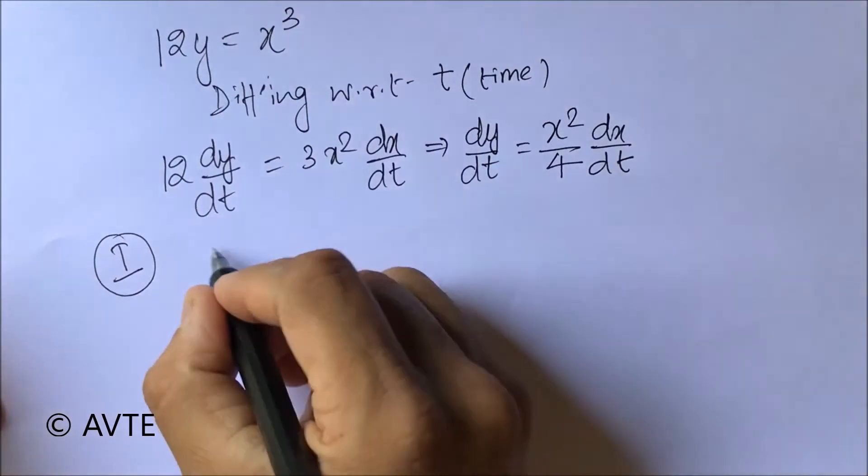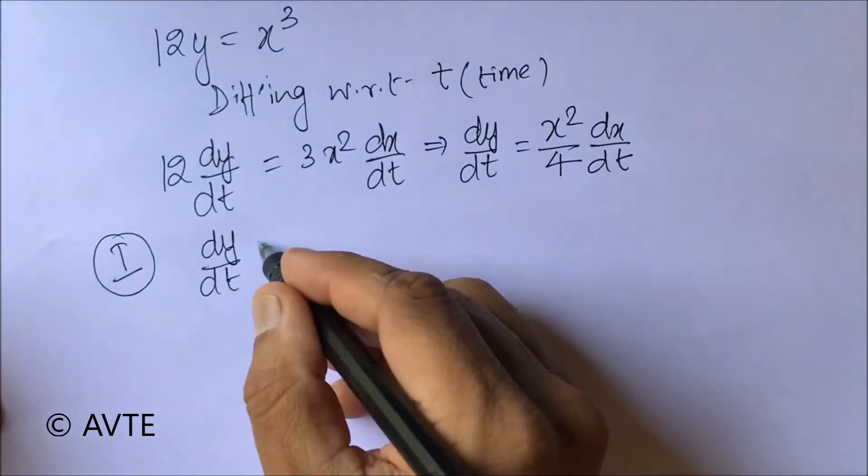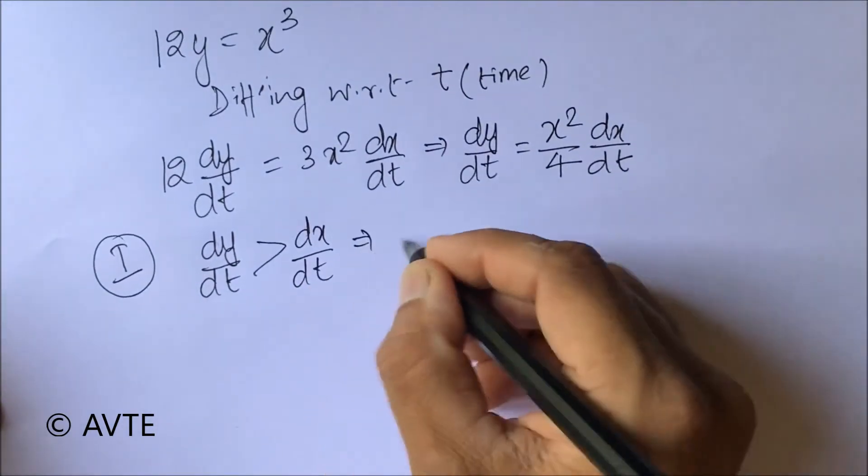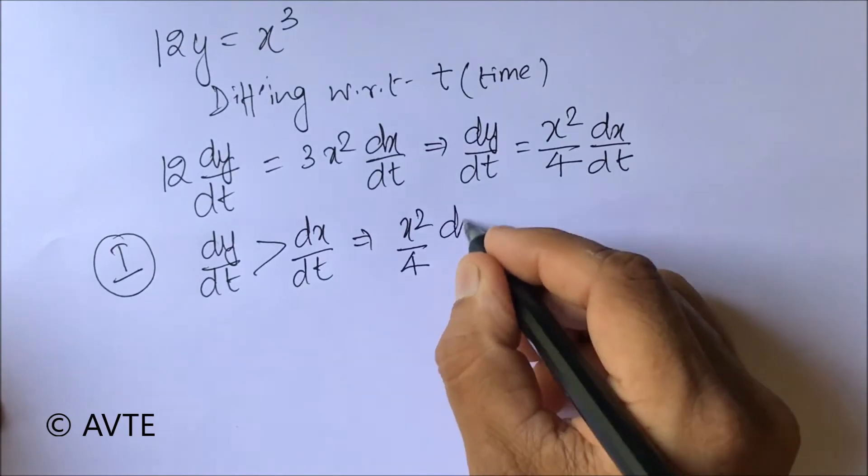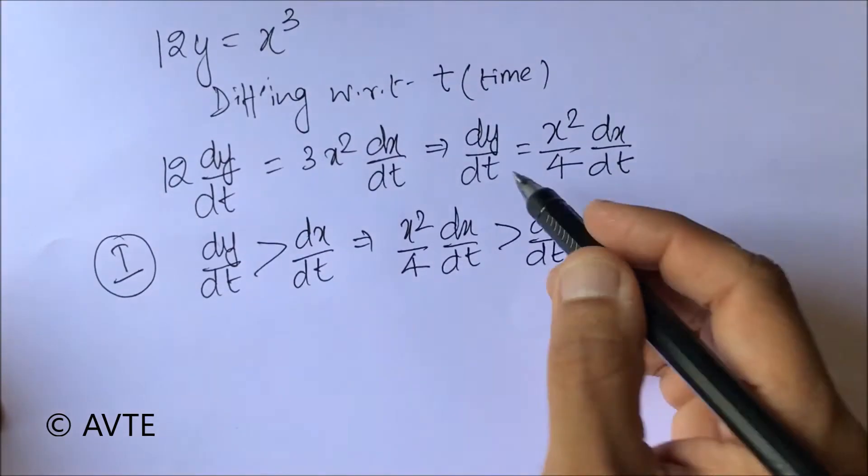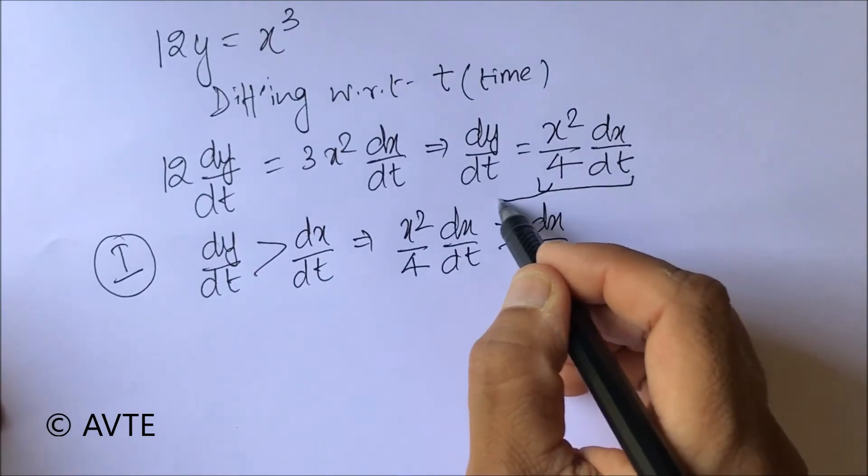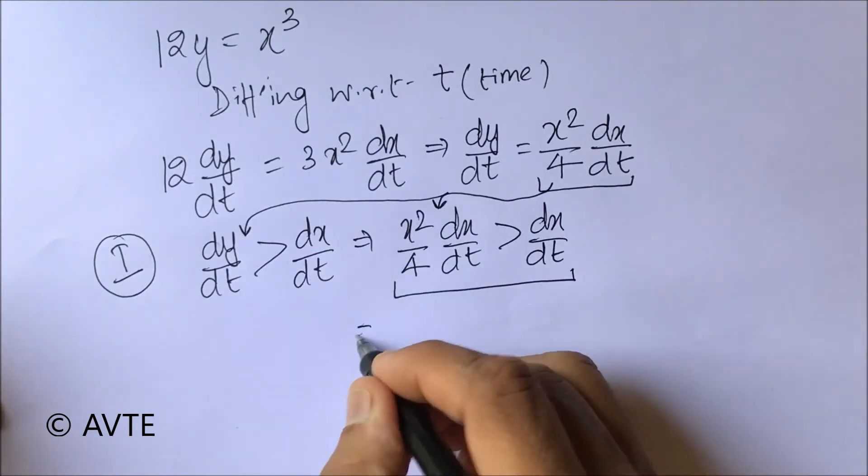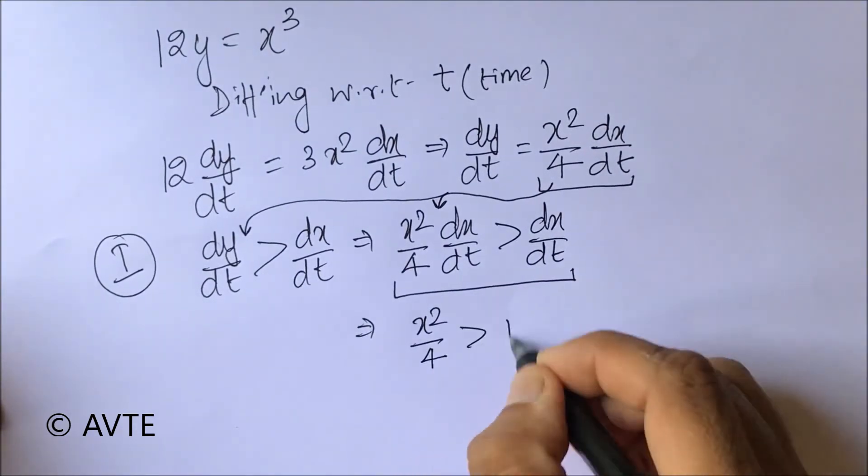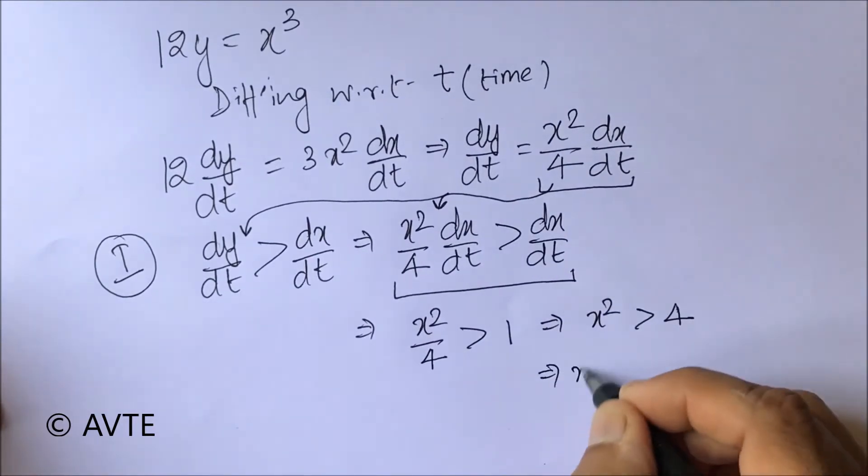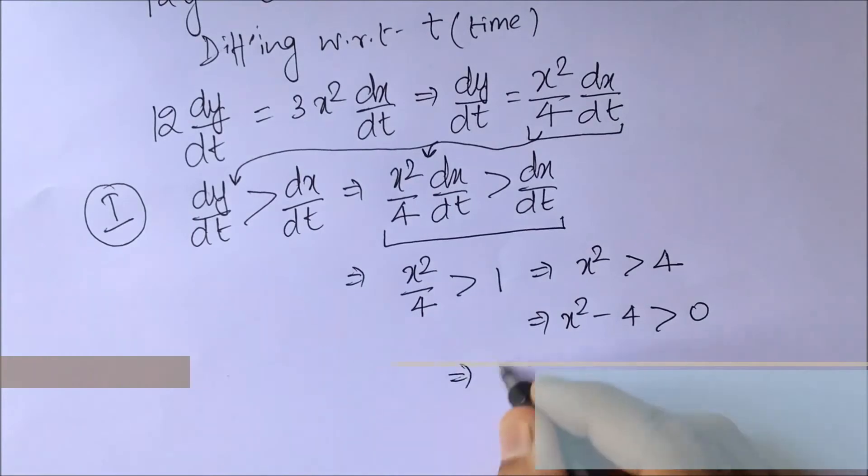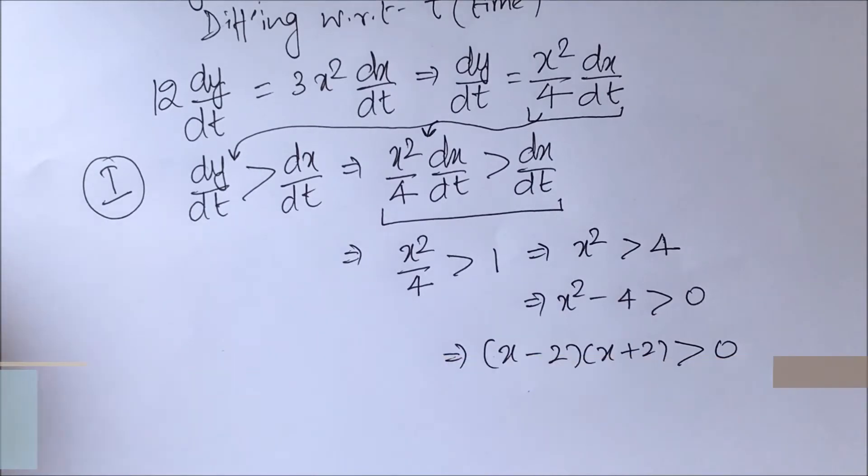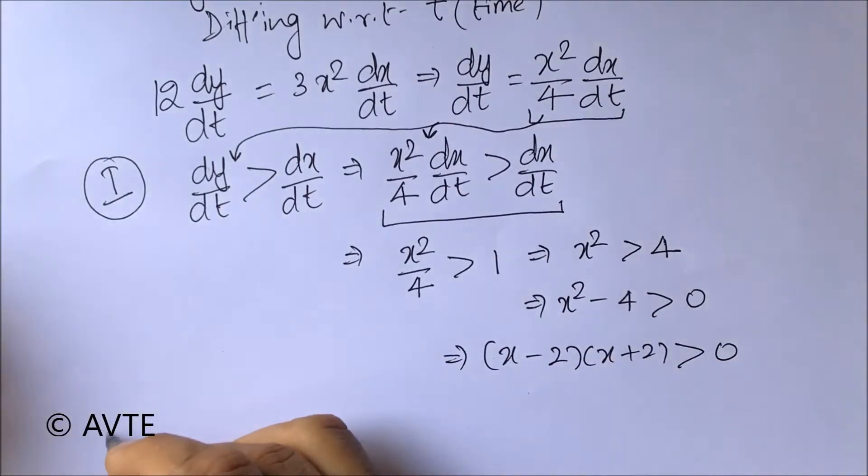First case where dy/dt is greater than dx/dt. We put the value of dy/dt here, so we have this thing with us. We'll make the linear factors and draw the number line.